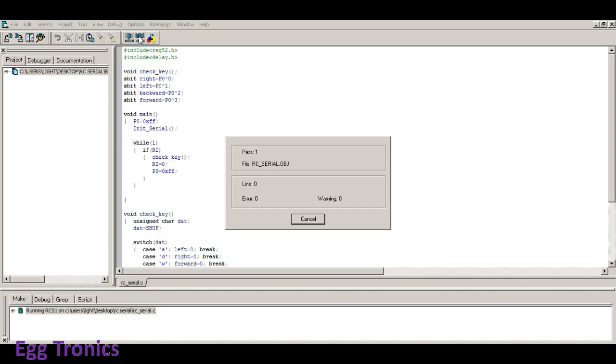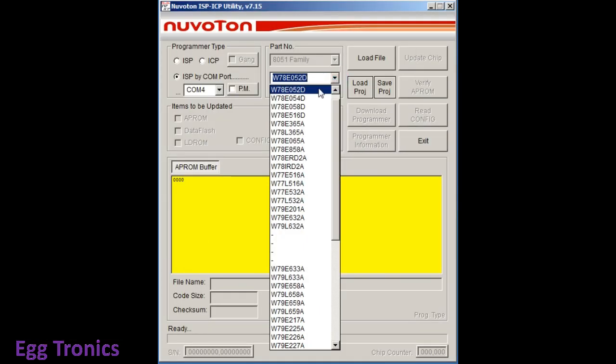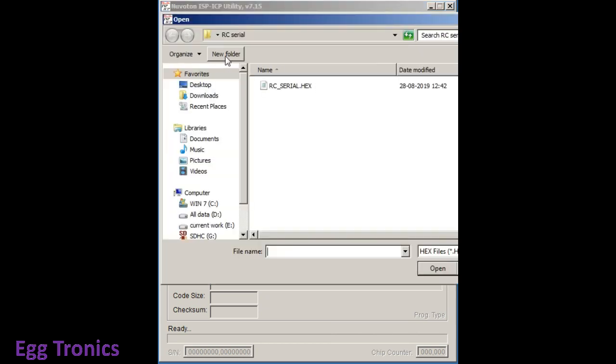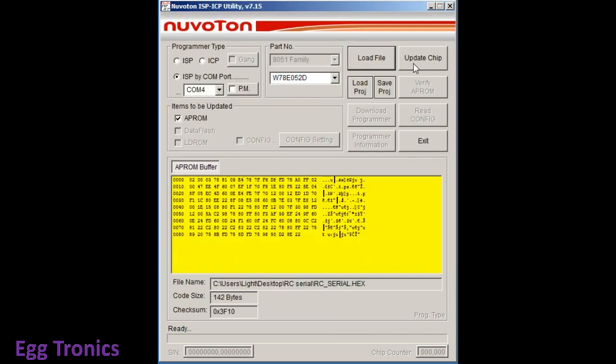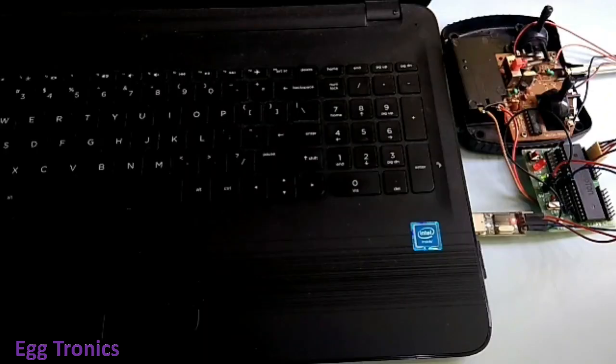After programming, I compiled the code and programmed the chip using Nuvoton's ISP utility. Since Nuvoton's W78E052 chip has inbuilt bootloader, much like P89V51RD2, I can program the chip using the USB to TTL converter, which I already connected to the board.